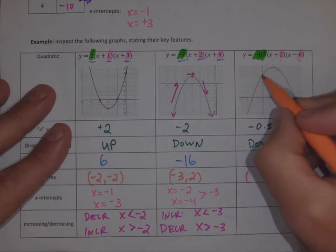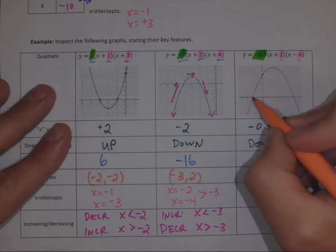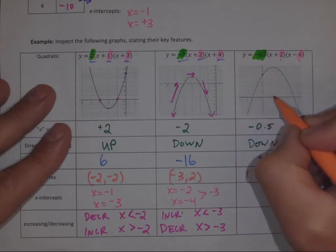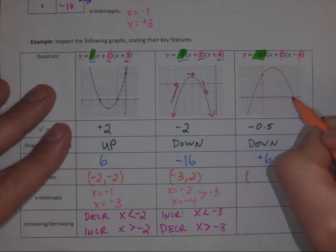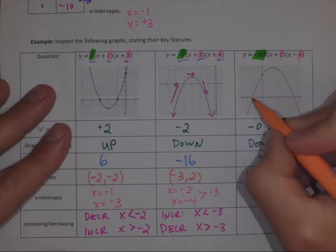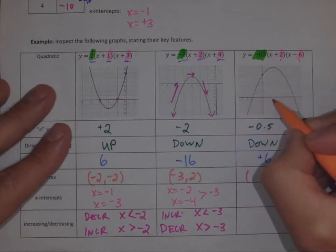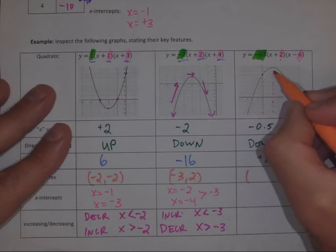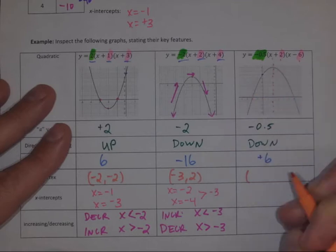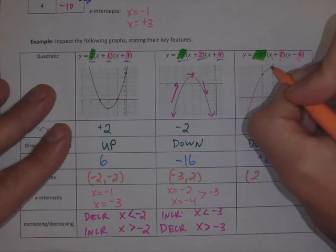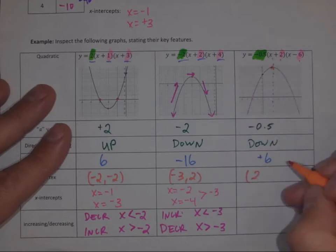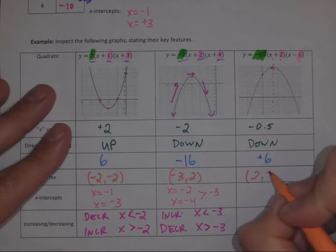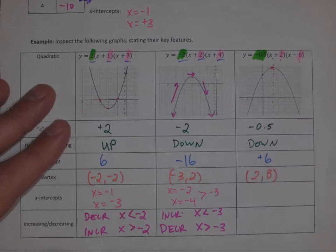Those x-intercepts are eight apart; eight divided by two is four. So we need to be four from each x-intercept. One, two, three, four — there's our axis of symmetry at x equals two. Because we have it graphed, we can see the vertex is at two, eight.